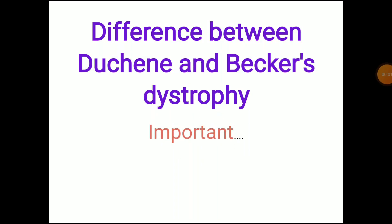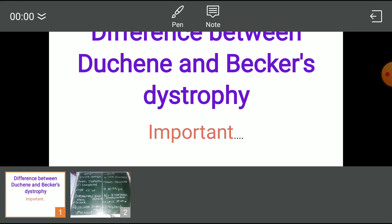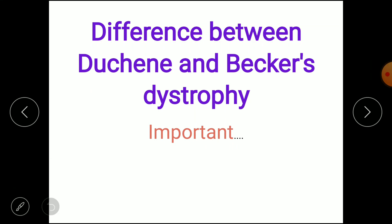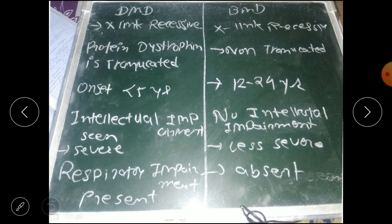The difference between Duchenne and Becker's muscular dystrophy. Basically, these two dystrophies are similar but slight differences are present between them. Let's discuss. First is the inheritance pattern: DMD is X-linked recessive and BMD is